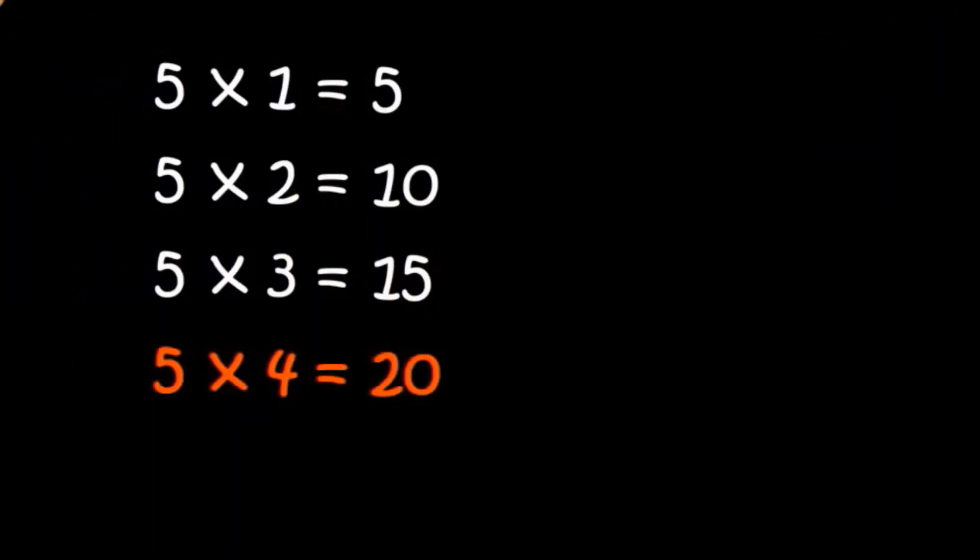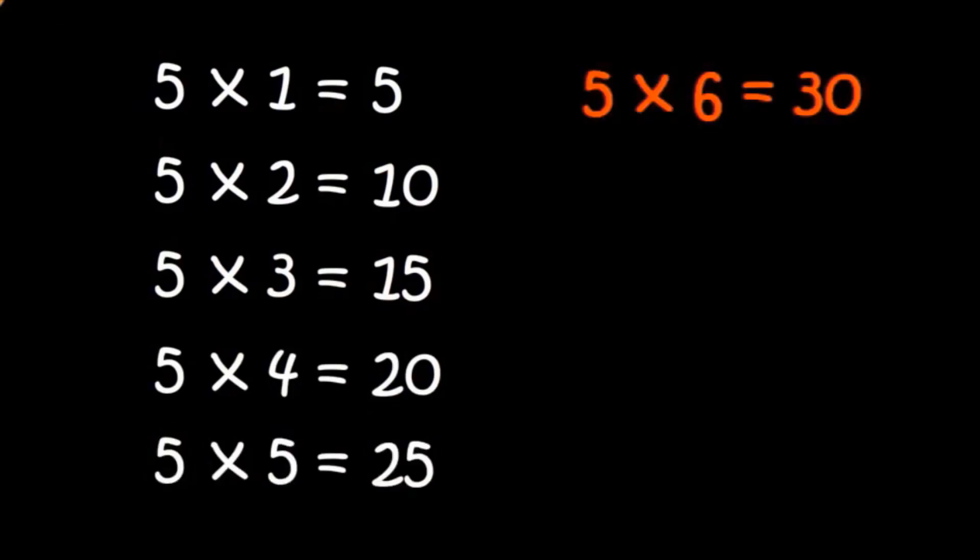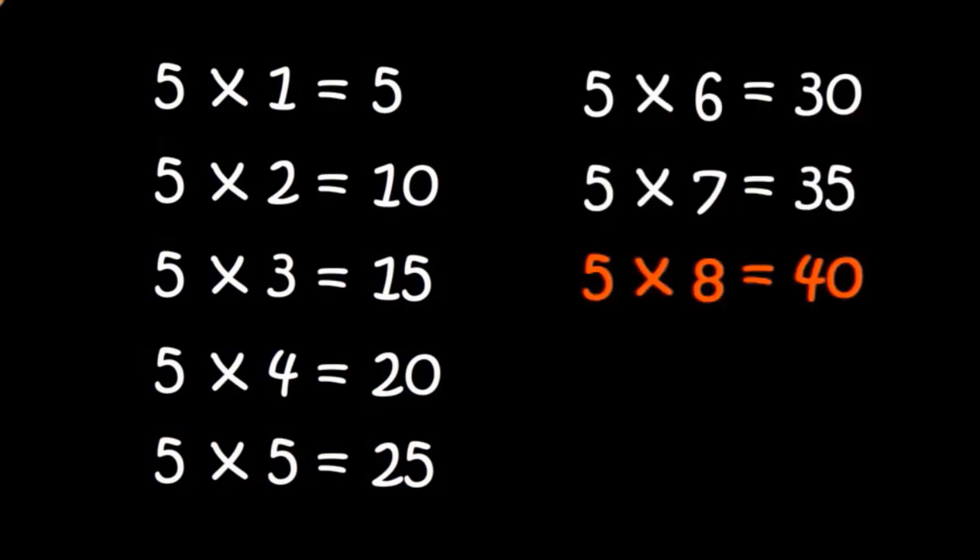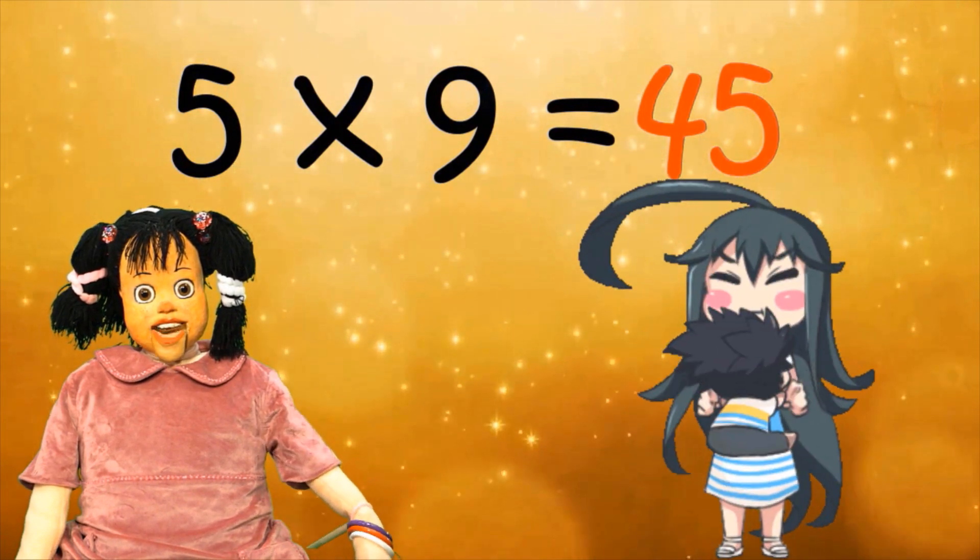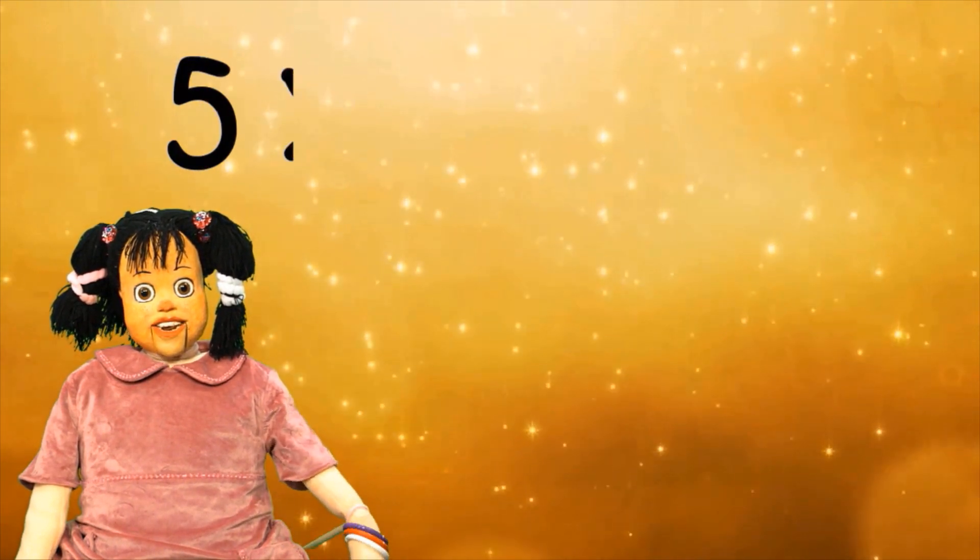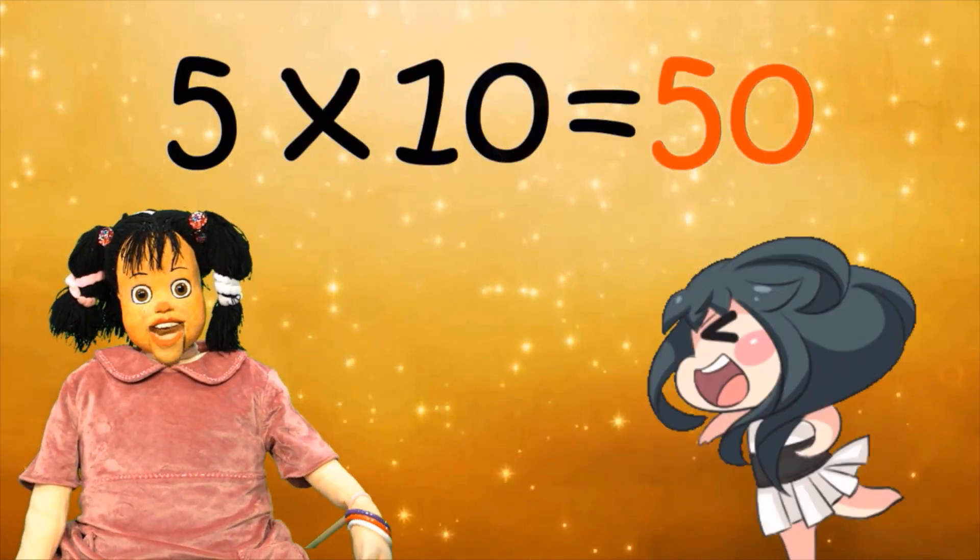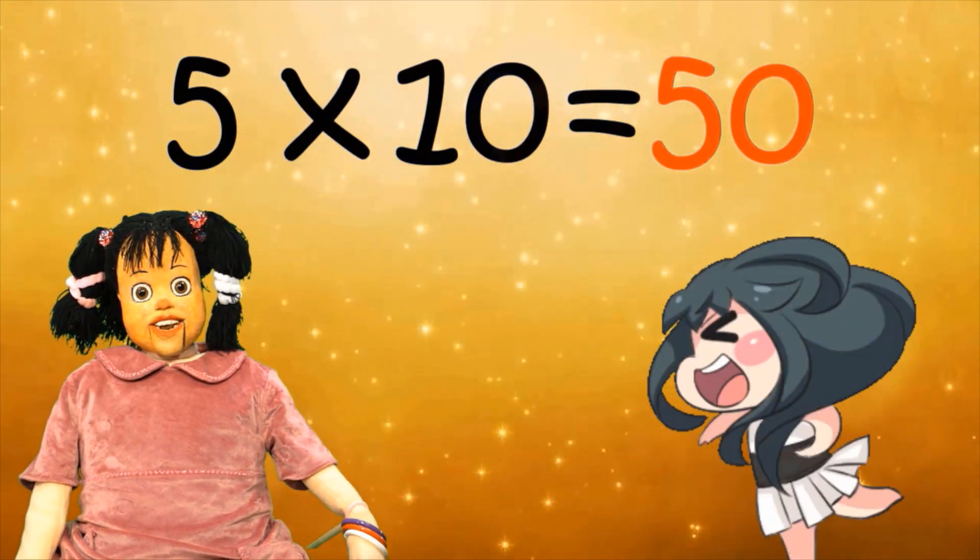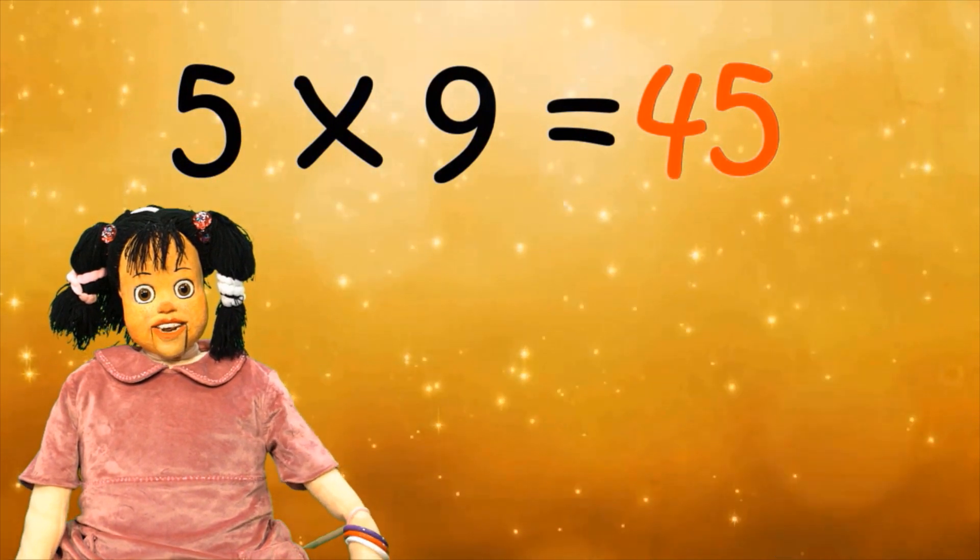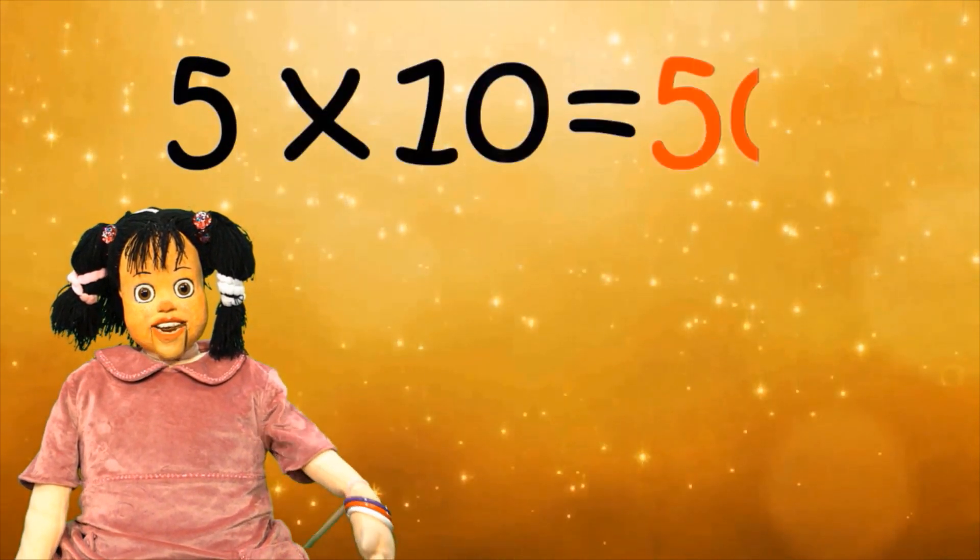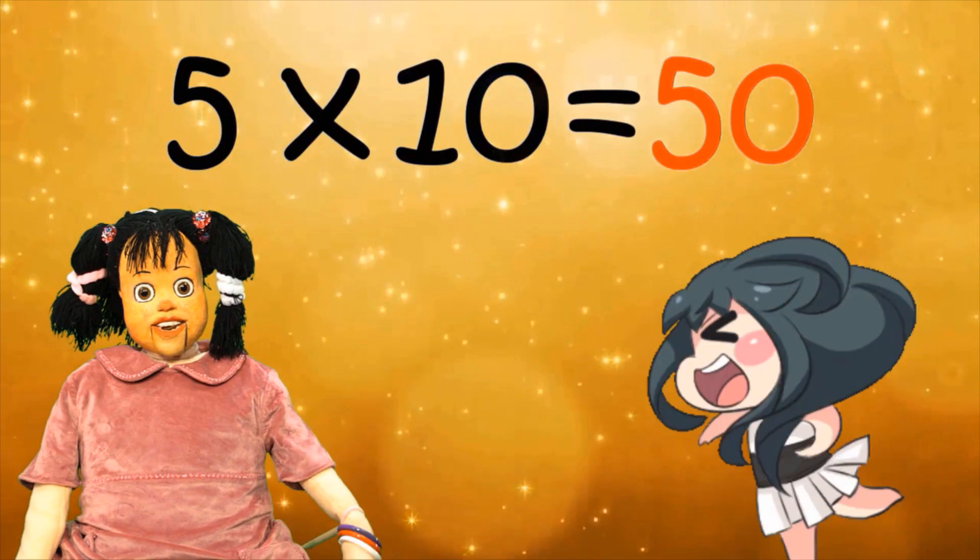5 times 9 equals 45, buradaki herkes kardeş. 5 times 10 equals 50, ödevini bitiren belli. 5 times 9 equals 45, buradaki herkes kardeş. 5 times 10 equals 50, ödevini bitiren belli.